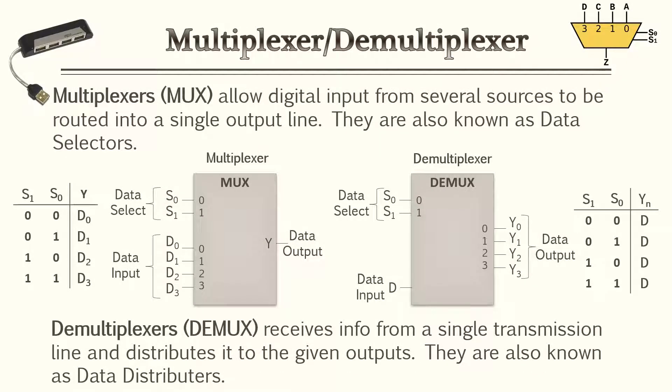And of course, we save the best for last, multiplexers and demultiplexers. Multiplexers allow a digital input from several sources to be routed to a single output line. This is known as a data selector.